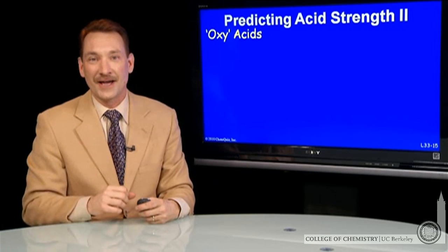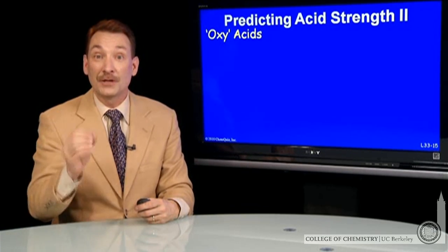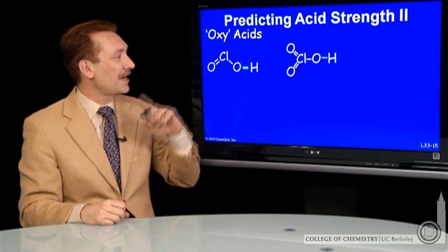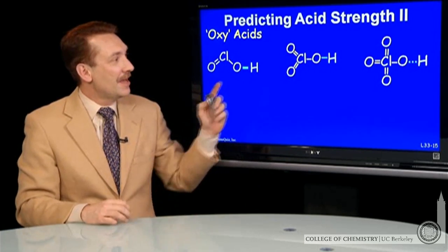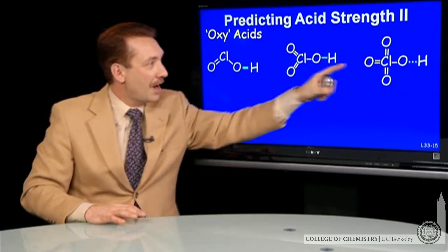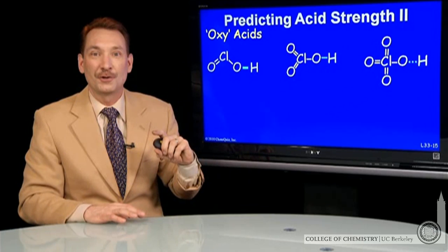Acid strength depends on a variety of factors. One of those factors is the polarity of the bond involving the hydrogen. So if you look at a series of compounds like this, this OH bond becomes more polar as you add more oxygens around this chlorine.